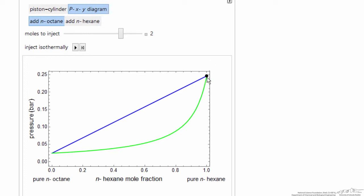We're starting with pure hexane in vapor-liquid equilibrium, and when I inject, then I move to a mixture, but at constant pressure it puts it in the all-liquid region.